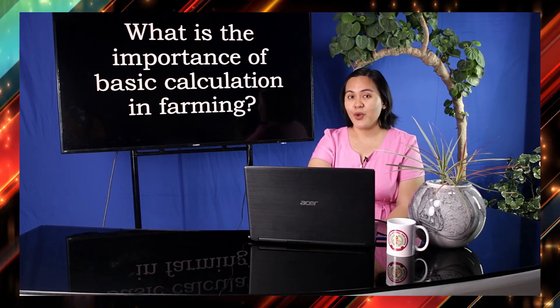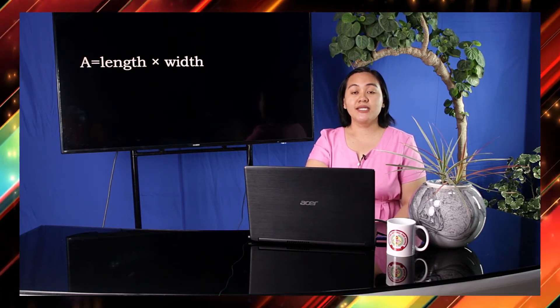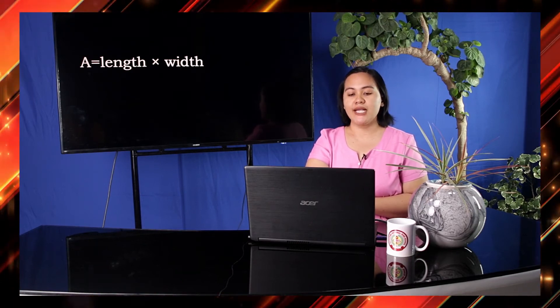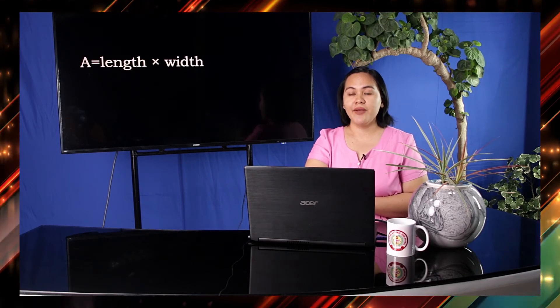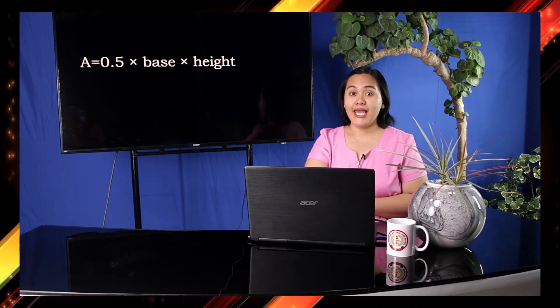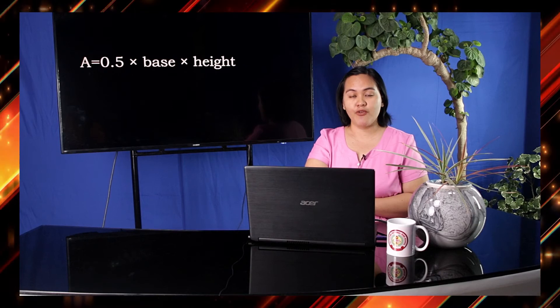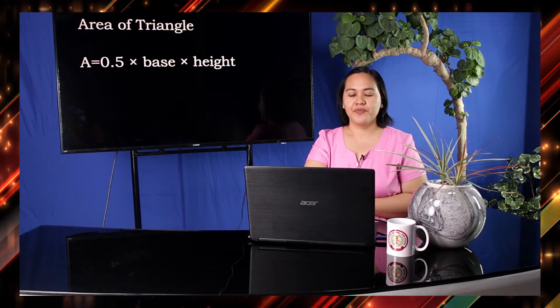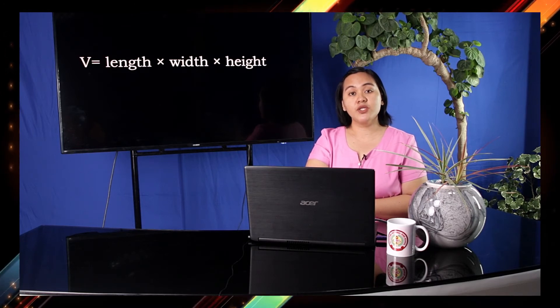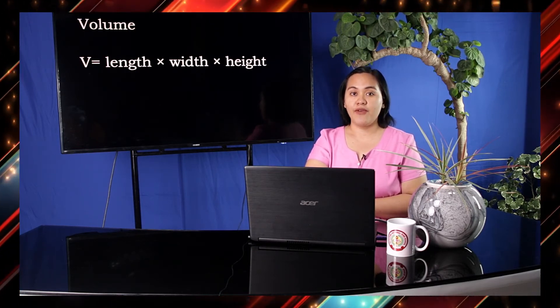Now, let's review your answers from the pre-test. A while ago, I showed you some formulas. The first formula, A = length × width, is used to solve for the area of a rectangle. The second formula, A = 0.5 × base × height, is used for solving the area of a triangle. And finally, V = length × width × height is used for solving the volume.